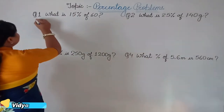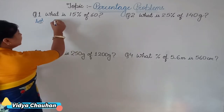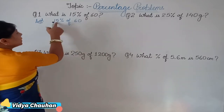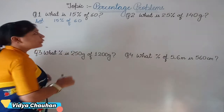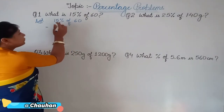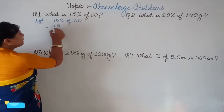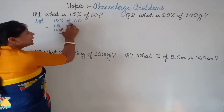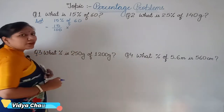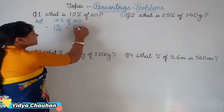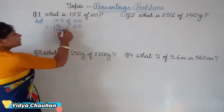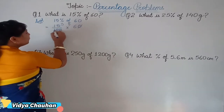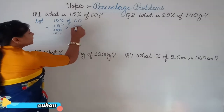The solution begins like this: since you have to find 15 percent of 60, first convert the percentage to a fraction. Remove the percentage sign, so it becomes 15 upon 100. In place of 'of' there will be a multiplication sign, then multiplied by 60. Now let's do the simplification — the zeros cancel, then simplifying by 5, and simplifying once more by 2.